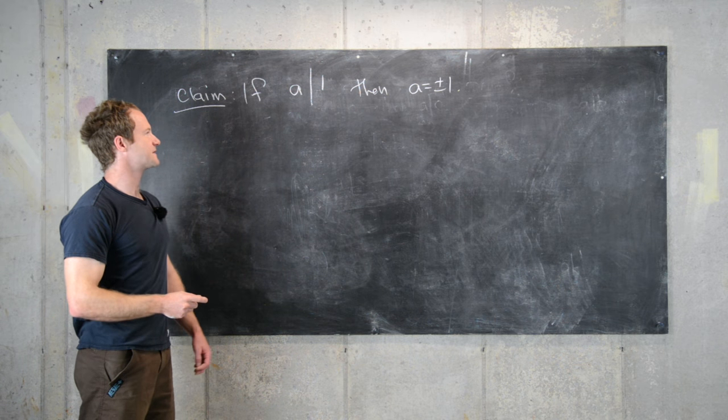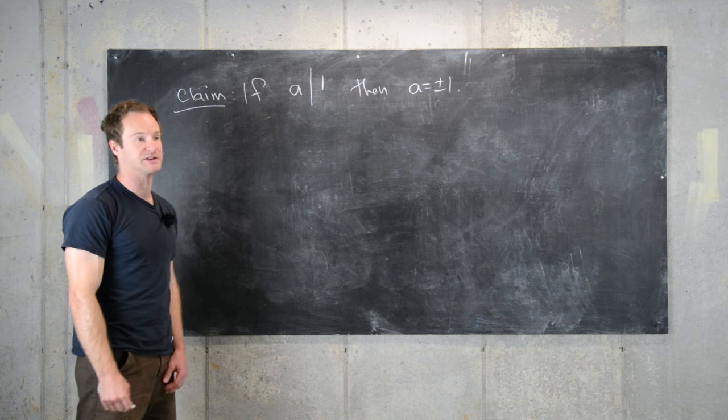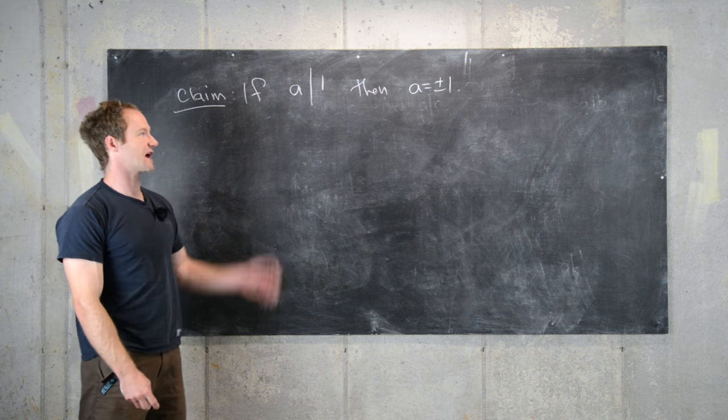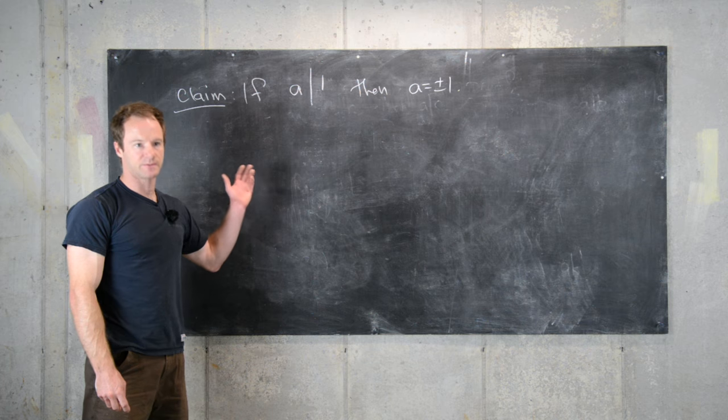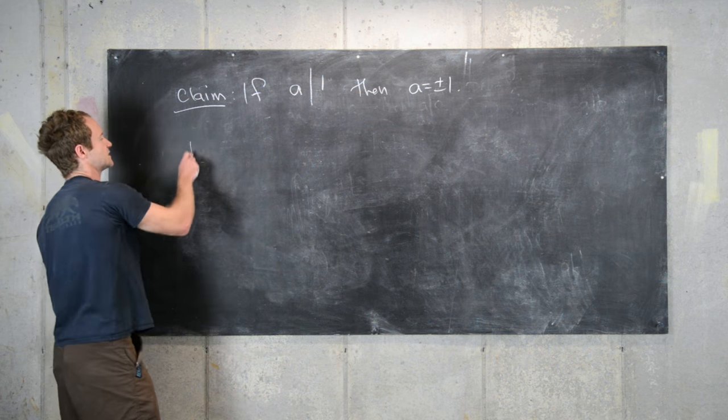That makes sense because if you have something that divides 1 it seems like it would have to be a fraction or it would have to be smaller than 1, and that's exactly what we're getting at here in terms of absolute value at least. Let's prove this.